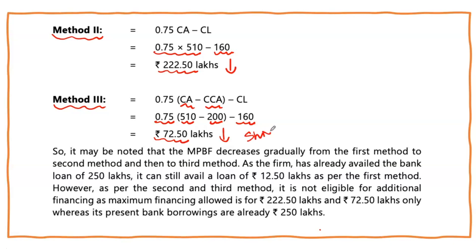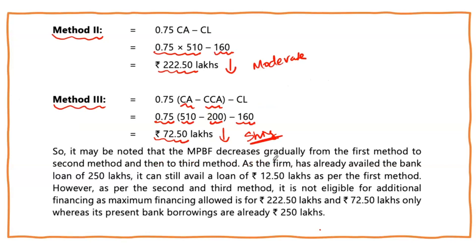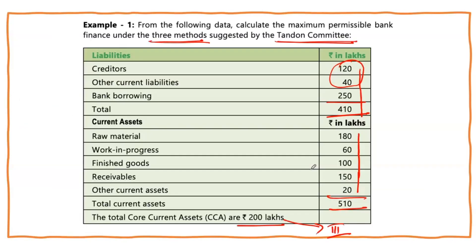So MPBF decreases gradually: from 262.50 under Method 1, down to 222.50 under Method 2, and further down to 72.50 under Method 3. Method 1 is very liberal, Method 2 is moderate, and Method 3 is very stringent. In practice, banks typically calculate under both Method 1 and Method 2, then select whichever is lower.